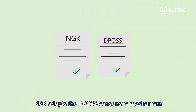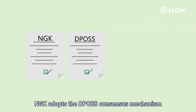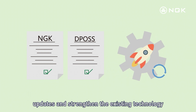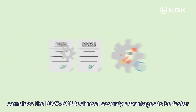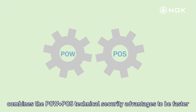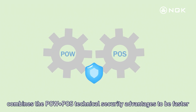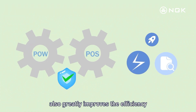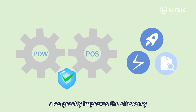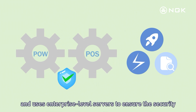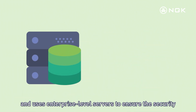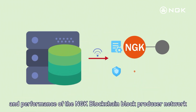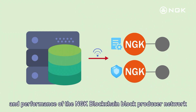NGK adopts the DPoS consensus mechanism, updating and strengthening existing technology, combining the security advantages of both PoW and PoS for faster and more practical operation. This greatly improves efficiency and uses enterprise-level servers to ensure the security and performance of the NGK blockchain block producer network.